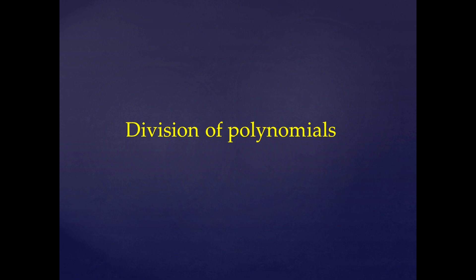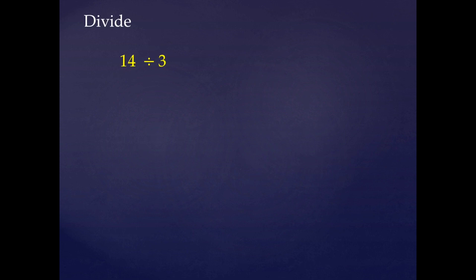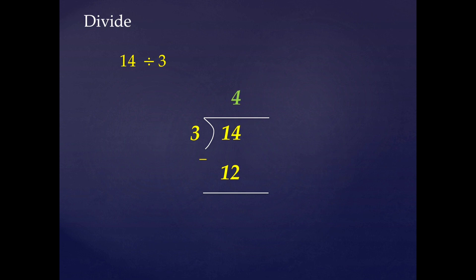Suppose if we have to divide two numbers, i.e. if we have to divide 14 by 3, we take 14 in the division sign as it is a dividend and divisor is 3, that's why we write 3 outside the division sign. Then we divide 14 by 3: 3 fours are 12, so the quotient is 4, and if we subtract 12 from 14, we will get 2 as a remainder.